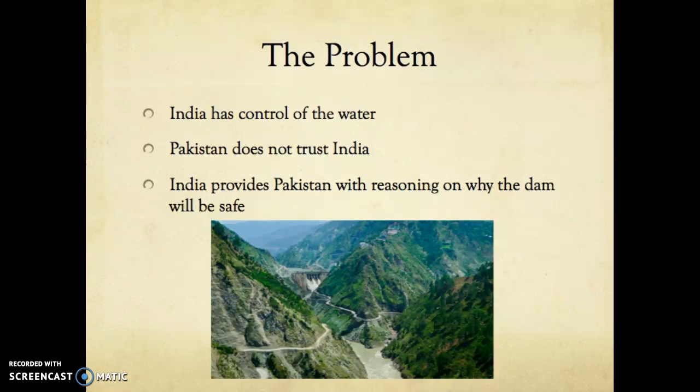Pakistan does not trust India, and so this is the main issue. The dam itself isn't that big of a problem if everyone follows the rules. Yet Pakistan thinks that India might betray them. When there's an excess of water, India is able to just let it out through the dam, and Pakistan is worried that they could be flooded. Also, if there's a shortage of water, Pakistan may not get the water because India has the ability to hold the water back through this dam without releasing any to Pakistan.